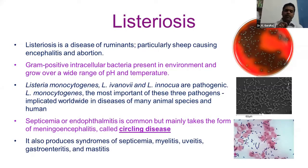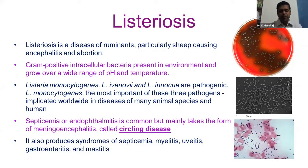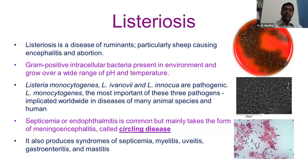The most common way by which Listeriosis causes abortion is by the hematogenic route, where complete septicemia can lead to endophthalmitis. These are the most common findings in sheep, along with meningoencephalitis, which is why it leads to the typical circling form. Septicemia, myelitis, uveitis, gastroenteritis, and mastitis are other symptoms to notice.